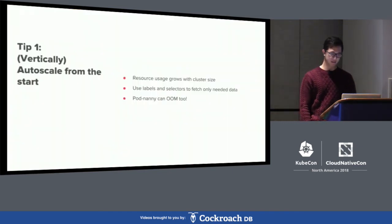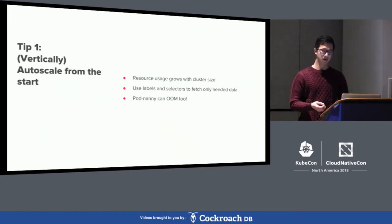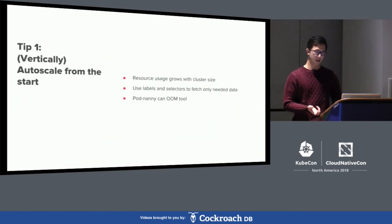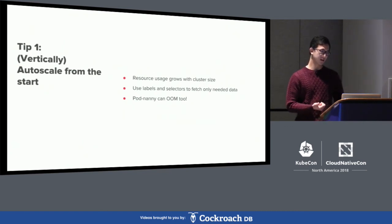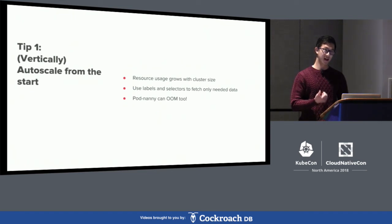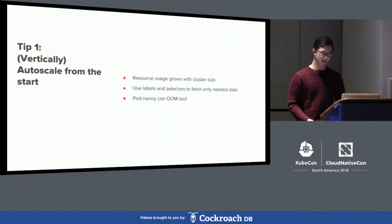Tip number one: always auto-scale your controllers. As your cluster size grows, if you're using the Go client you'll be maintaining a local cache of your objects, and it's easy for memory and CPU usage to creep up as you expand. You can use labels and selectors to optimize your data fetch. Options for auto-scaling include Vertical Pod Autoscaler or PodNanny, which is a sidecar. One important thing to note: PodNanny itself is kind of a controller. We had a case where we were using Heapster with PodNanny as a sidecar and found Heapster was unavailable because PodNanny itself had run out of memory.